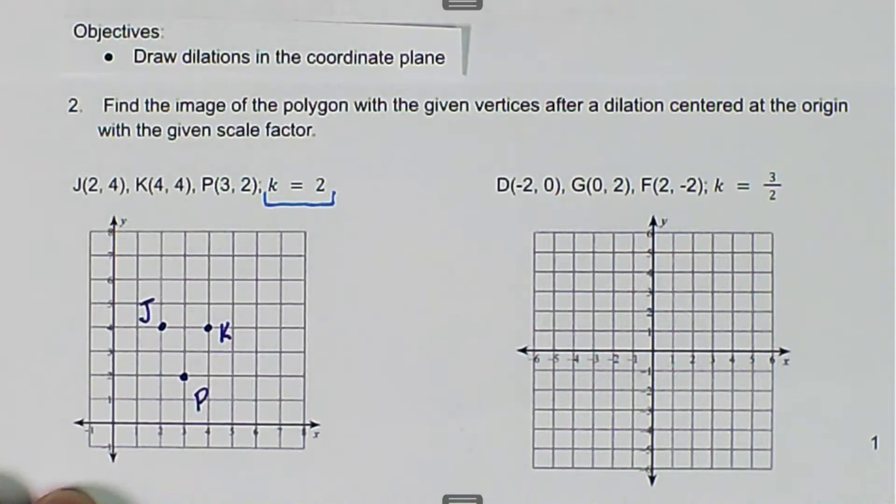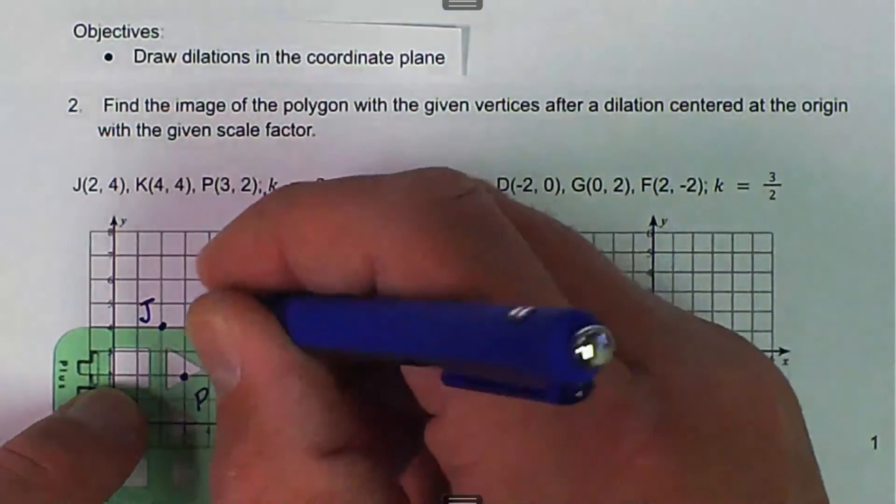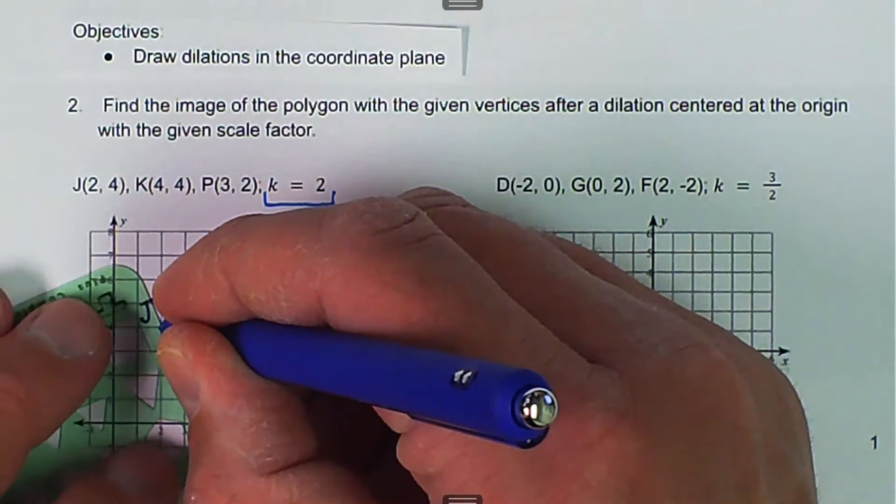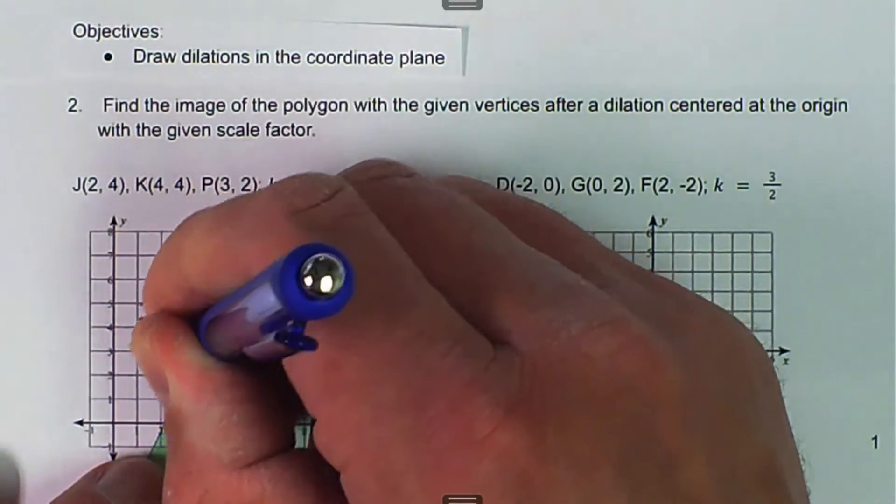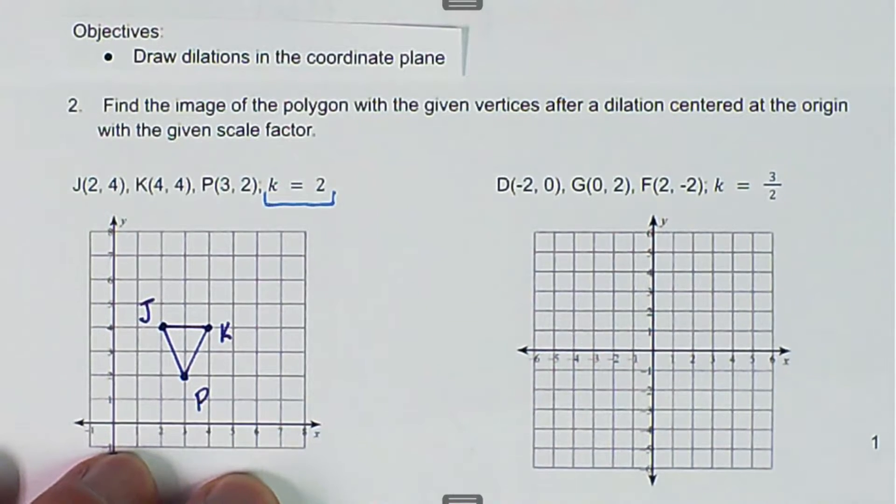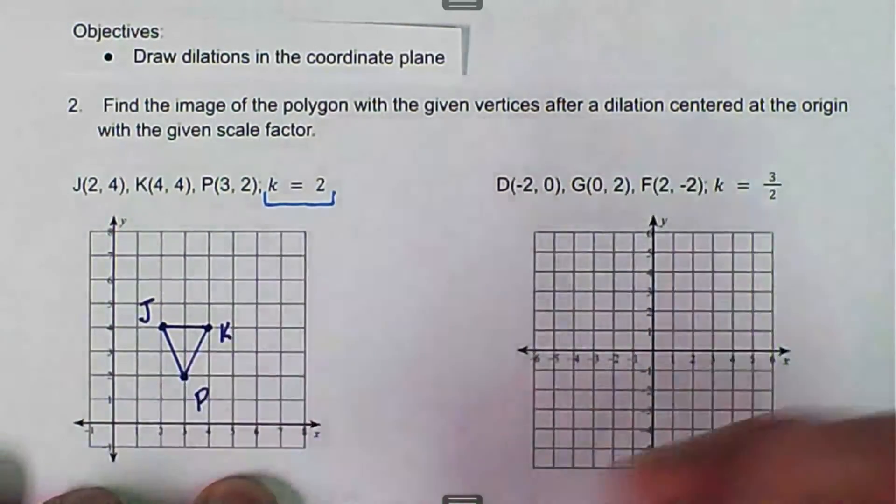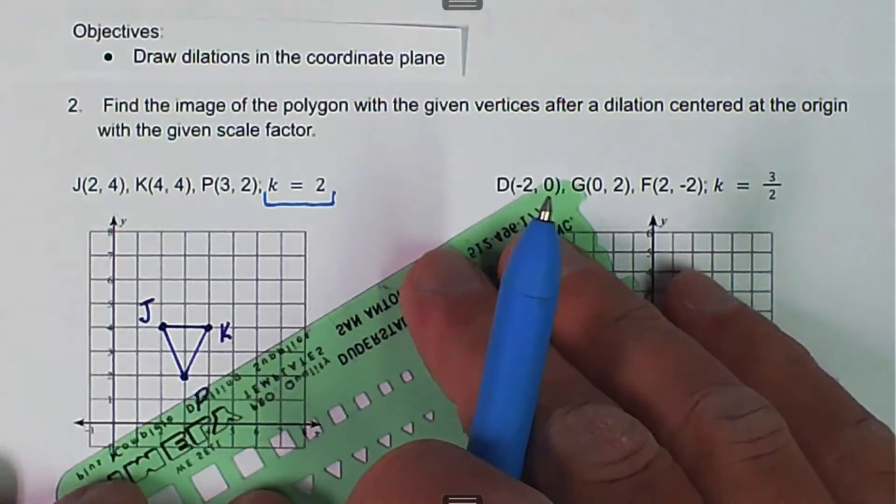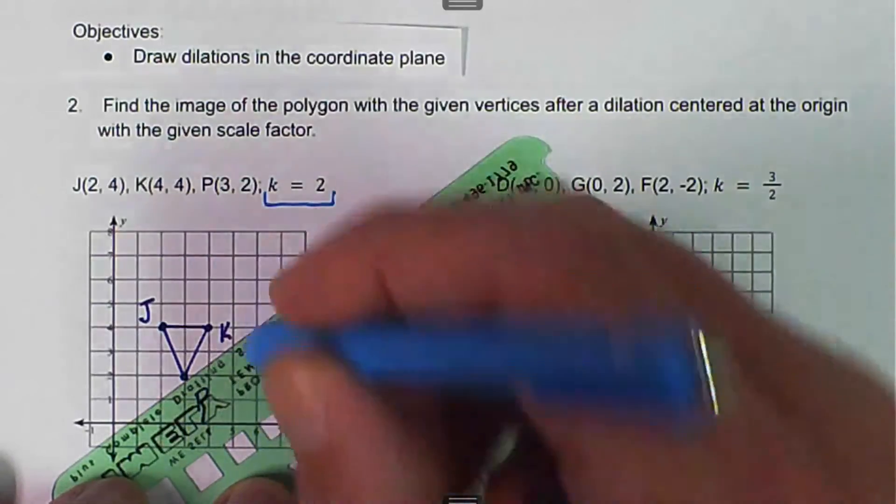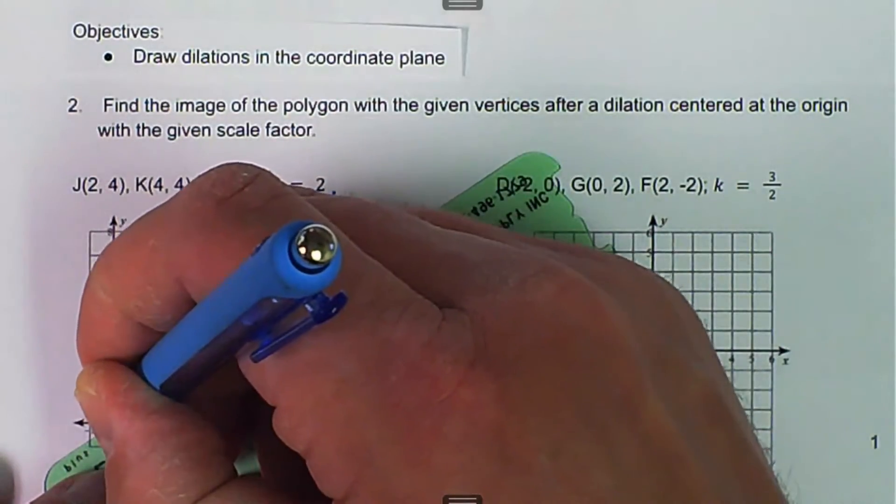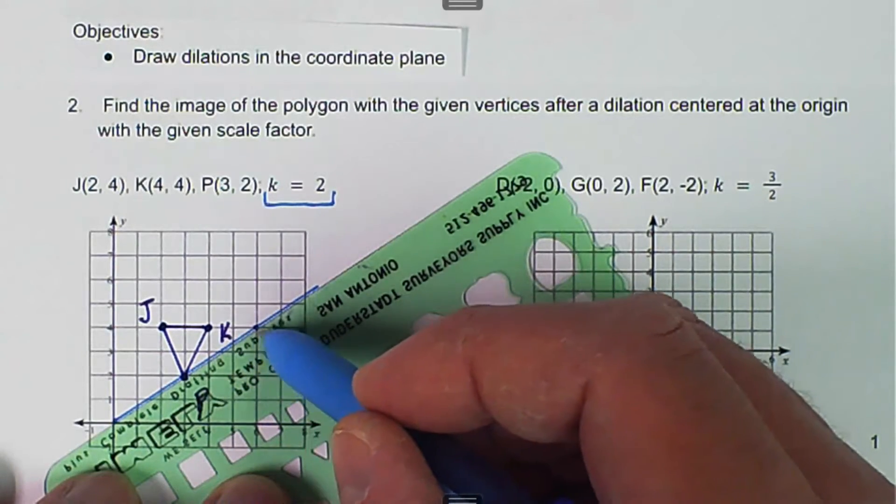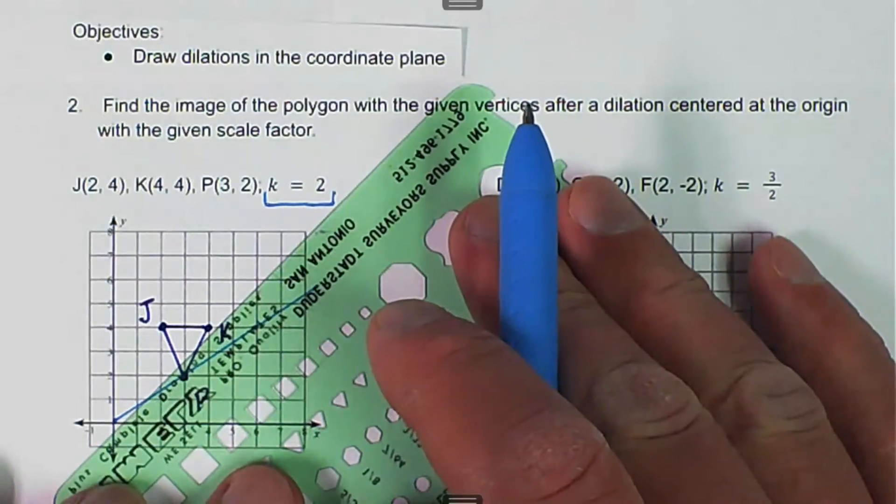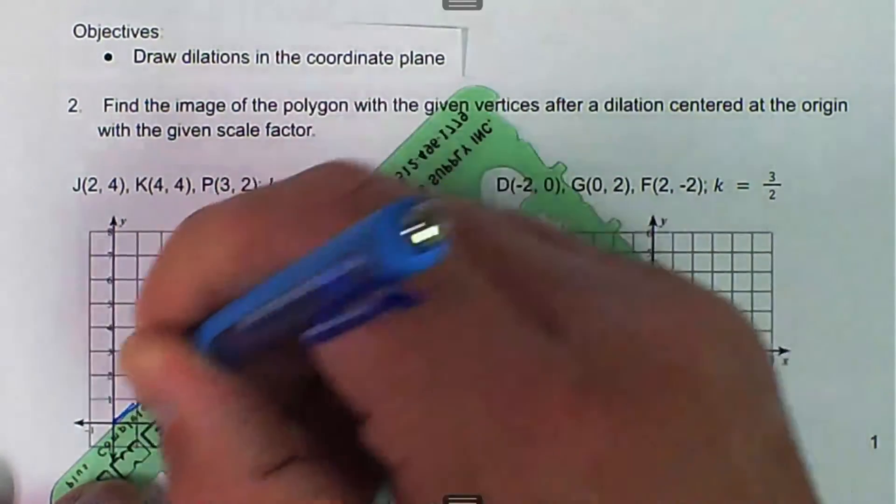And I'm going to draw the line between those. Now, in this one, I'm going to draw the lines that go through the vertices, and then I'm going to count.